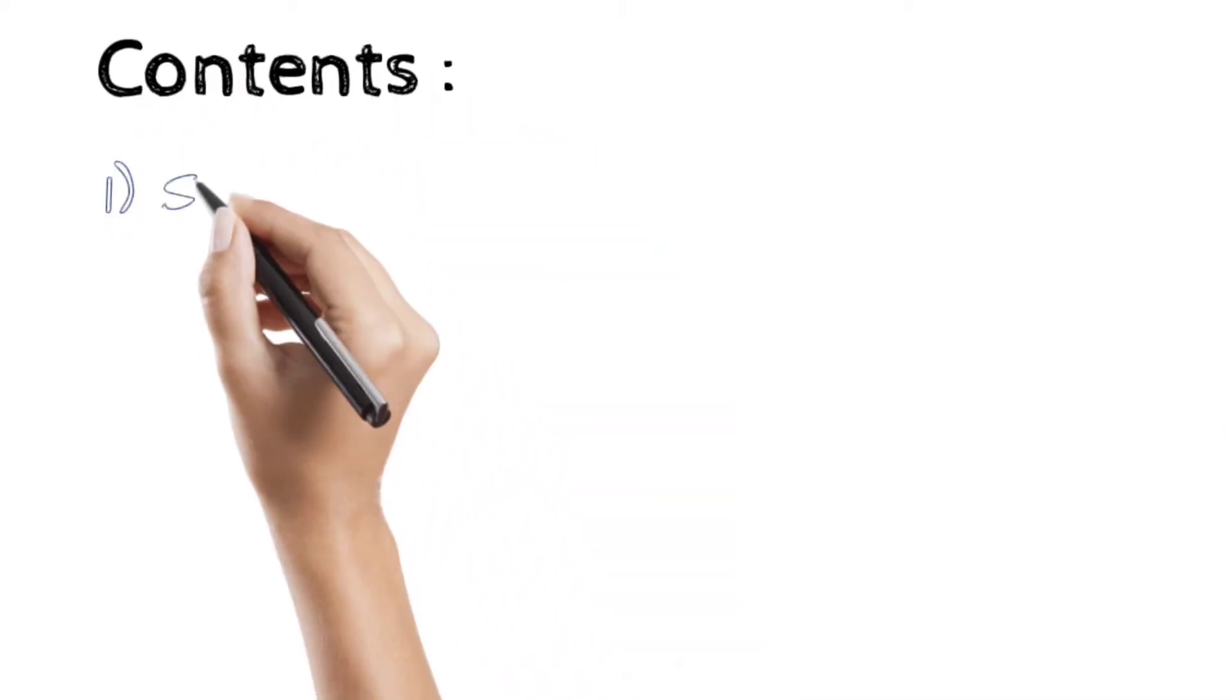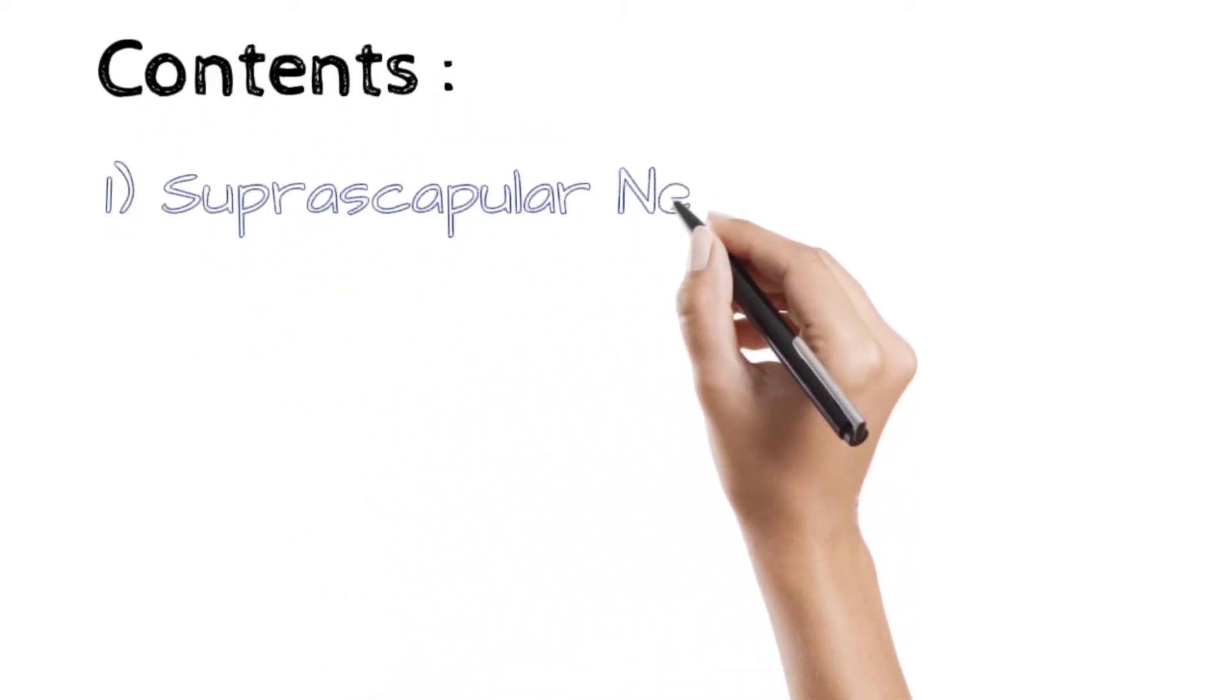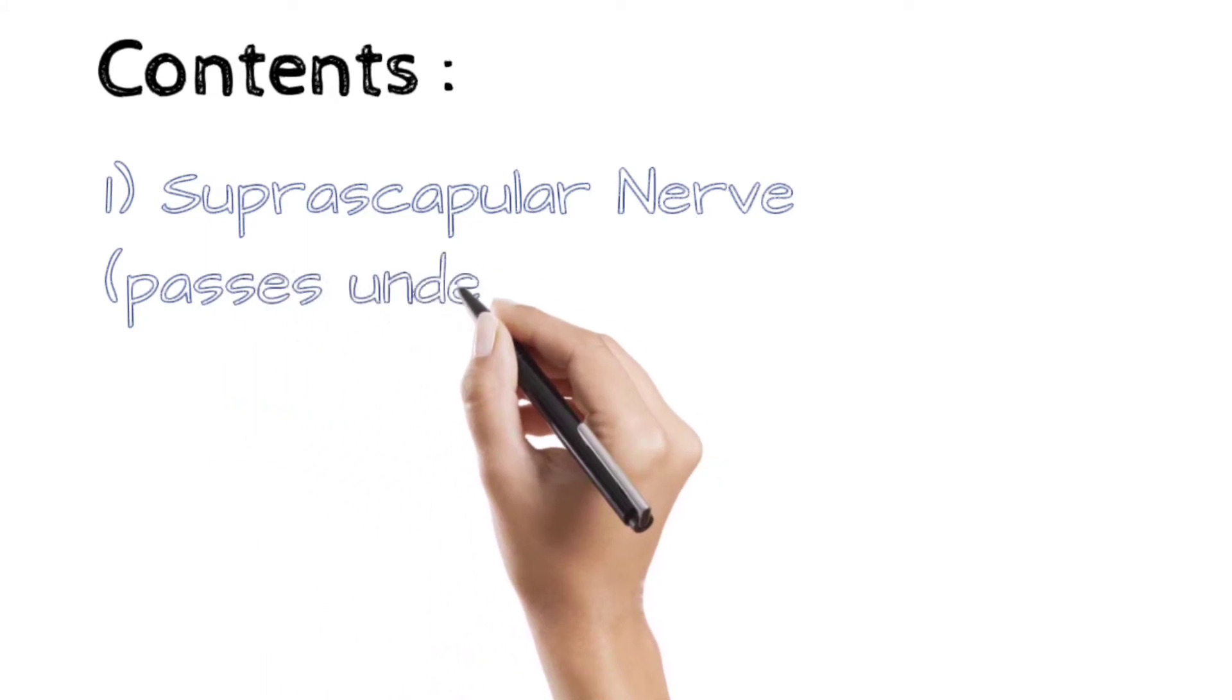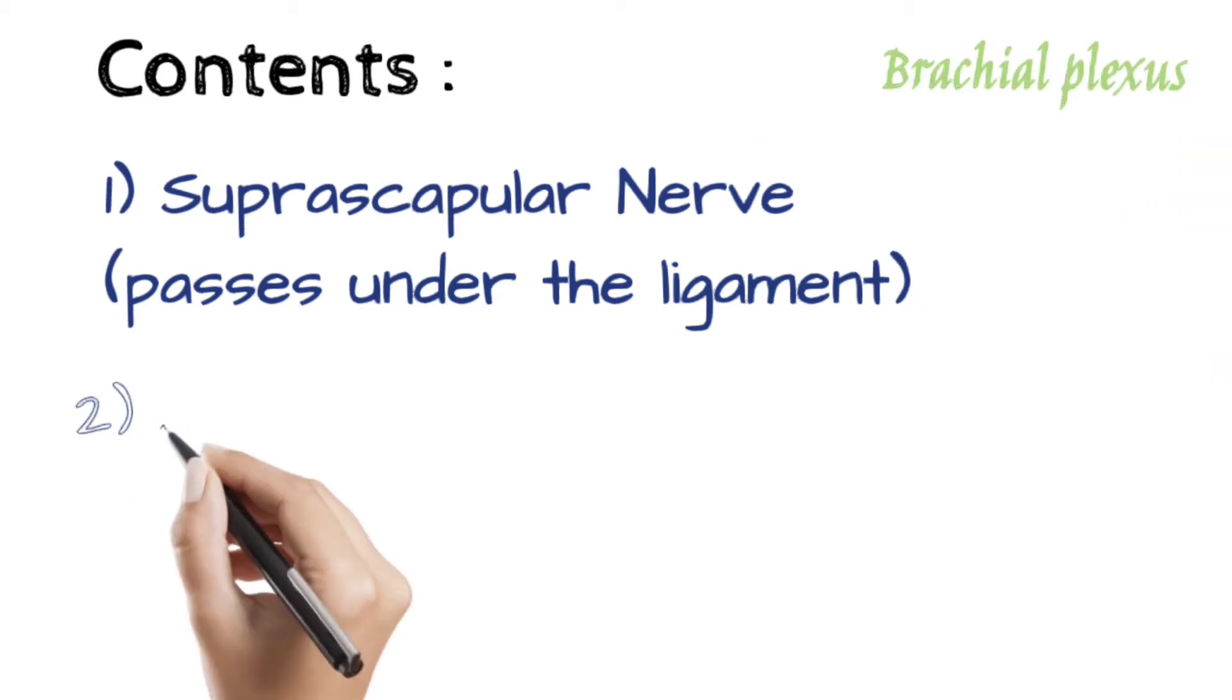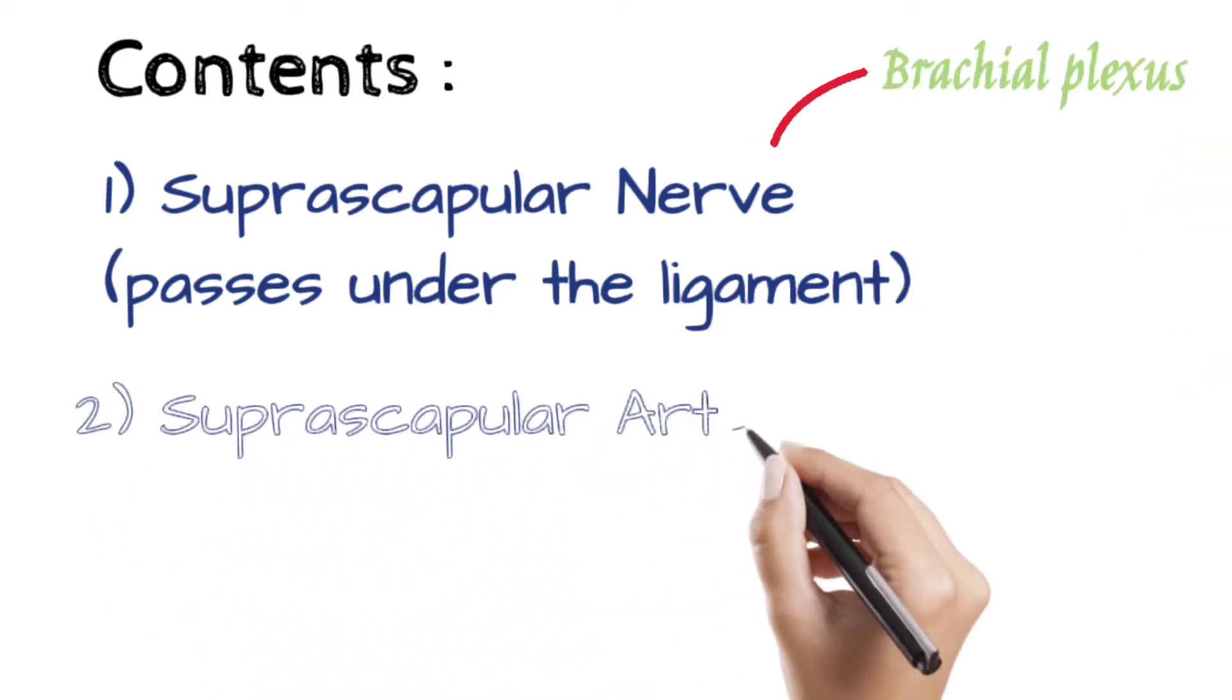Contents: suprascapular nerve which passes under the ligament, which is a branch of the brachial plexus. Suprascapular artery passes adjacent to the nerve above the ligament.